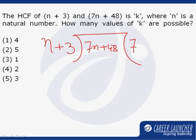This is 7, so 7 into n plus 3 will come out to be 7n plus 21. Take a difference, so 7n minus 7n is 0, 48 minus 21 is 27.